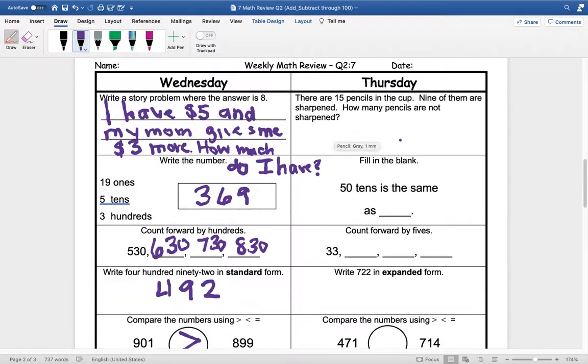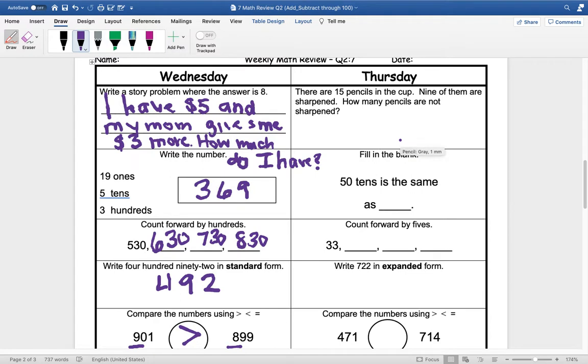All right guys, we are going to look at Thursday spiral review. Our word problem for today says there are 15 pencils in the cup, none of them are sharpened. How many pencils are not sharpened? So we are going to subtract: 15 minus 9 equals 6. So 6 pencils are not sharpened.